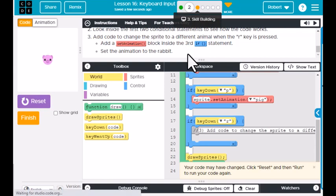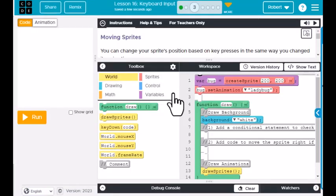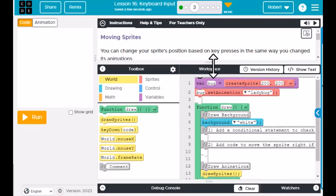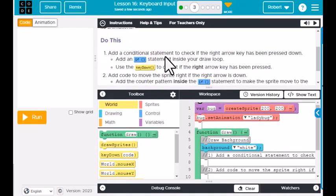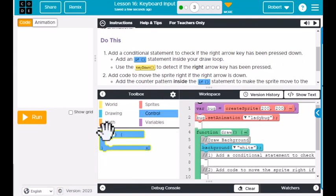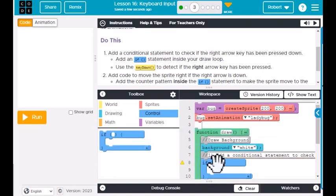If we look at step three of the skill building, they're going to give you another set of instructions. It says you can change your sprite's position based on key presses in the same way you change its animation. Add a conditional statement to check if the right arrow key has been pressed down. So we're going to add a conditional statement, and those would be over under control. If is a condition—if that condition is met, we're going to do something.